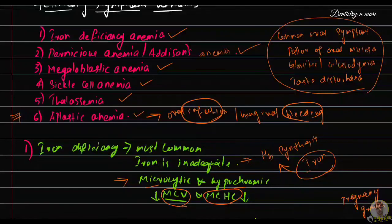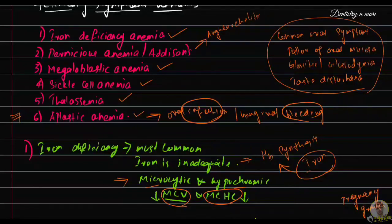For pernicious anemia patients, oral manifestations include angular cheilitis, mucositis, thrush, and oral ulcers.